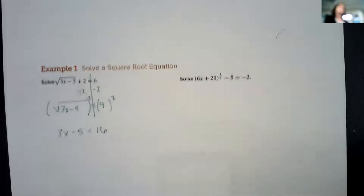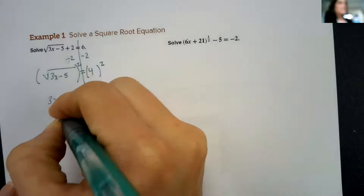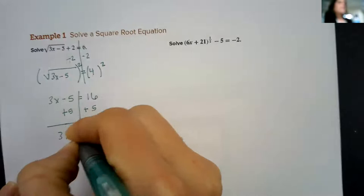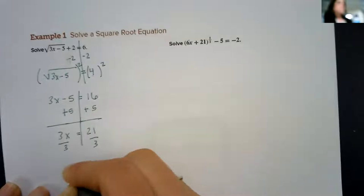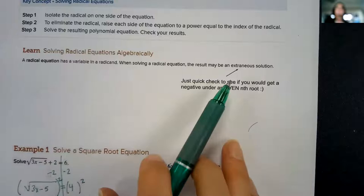Step three says to solve the resulting polynomial equation and check our result. Once we have this, now we're just solving it. It's going to take us a two-step equation here. That's 3x equals 21. Divide by 3, x is going to equal 7.